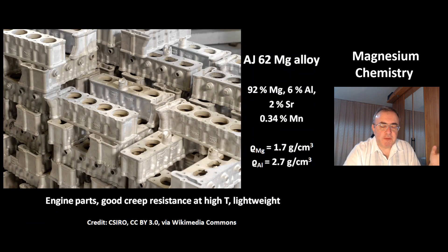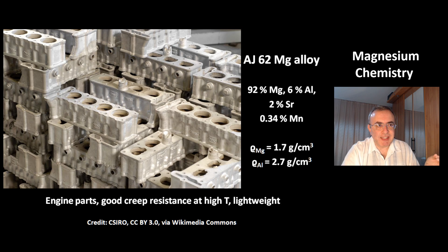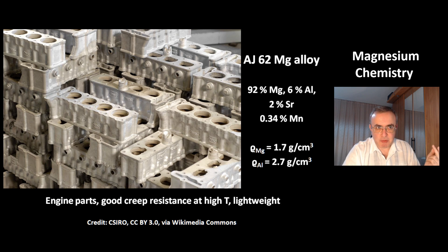This is a picture of AJ62, a magnesium alloy with 6% aluminum, 2% strontium, and 0.34% manganese. One advantage of magnesium is its low density of just 1.7 g/cm³ — that's more than one third less than aluminum.